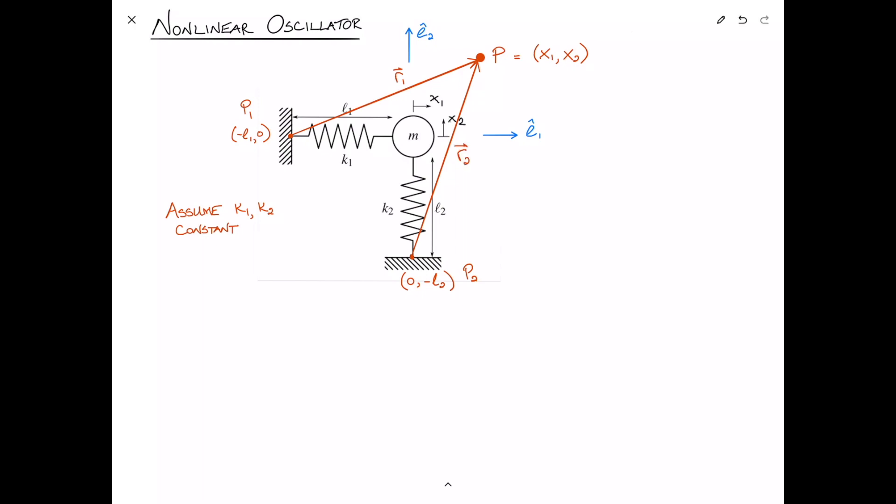Now something you might be asking yourself at this point is, if I found the stretch in spring k2, which is represented by this vector here, is k2 still in the negative e2 direction? Is k2 still downwards? Because it would appear that k2 is at an angle. In the past we've typically considered small deformations, and we say displacements are small and rotations are small, but we don't really talk about what we mean by small rotations.